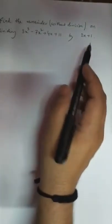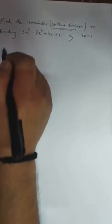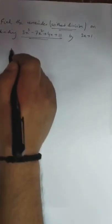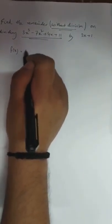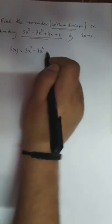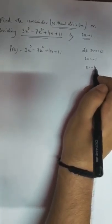Without division means we have to apply the remainder theorem. We take the dividend as a function of x: f(x) = 3x³ - 7x² + 4x + 11. We take the divisor equal to zero: let 2x + 1 = 0, so x = -1/2.